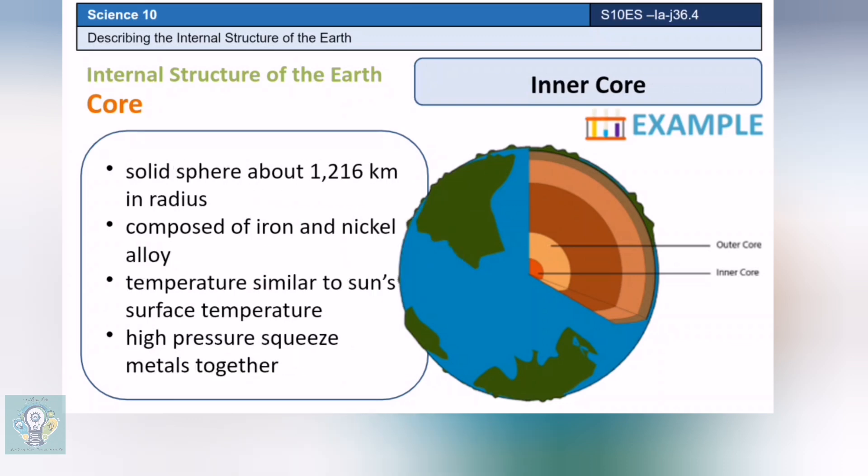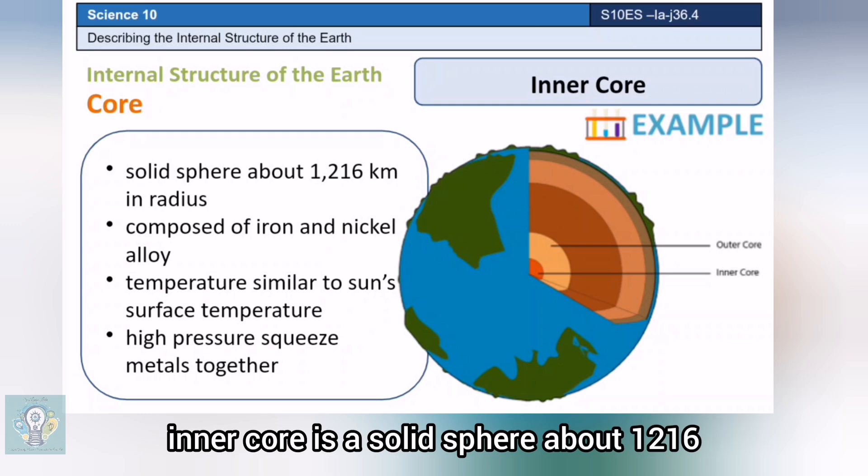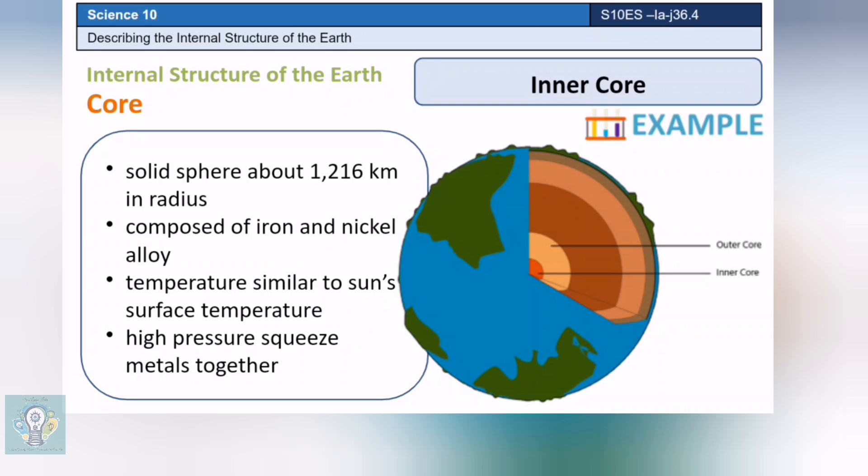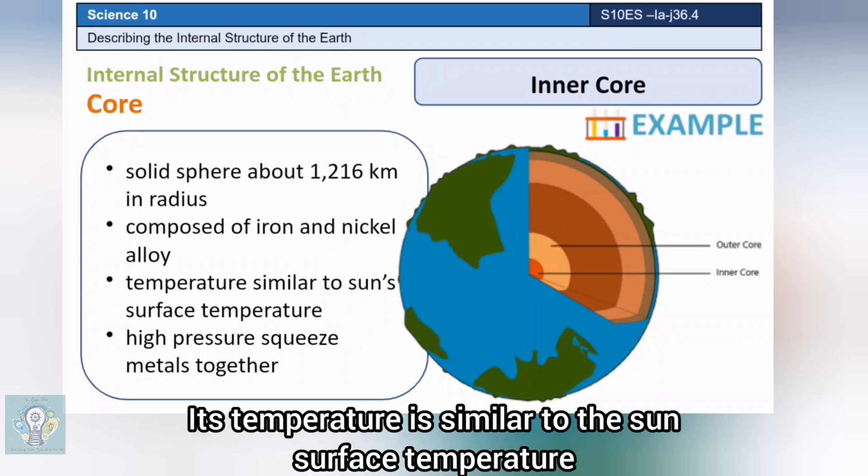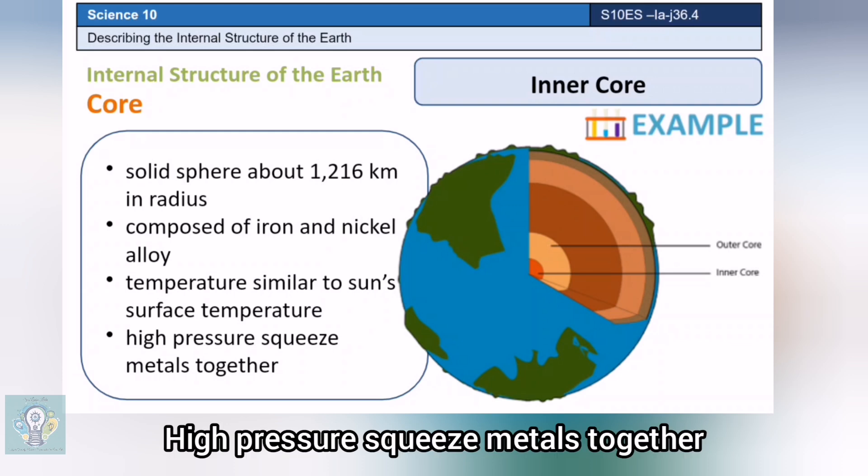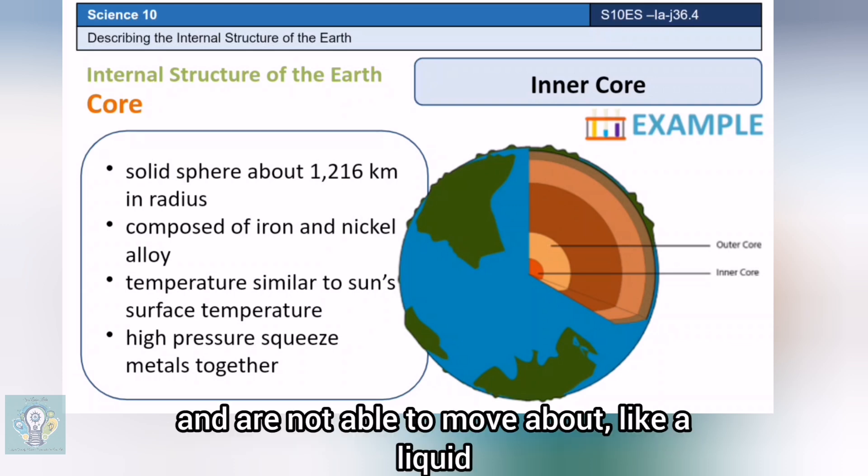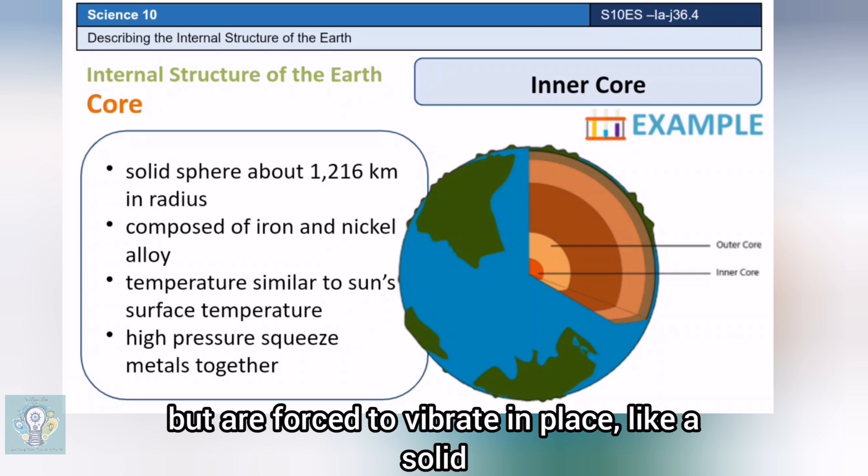On the other hand, the inner core is a solid sphere about 1,216 kilometers in radius. It is made of iron and nickel alloy. Its temperature is similar to the sun's surface temperature. High pressure squeezes metals together, and they are not able to move about like a liquid, but are forced to vibrate in place like a solid.